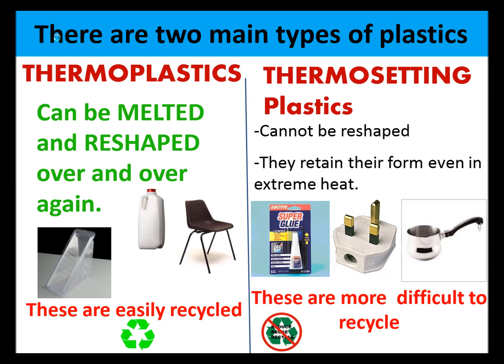The main two types of plastics we're going to look at are thermoplastics, which can be melted and reshaped over and over again and are easily recycled. The other type are thermosetting plastics, which cannot be reshaped over and over again — they retain their form even in extreme heat and are more difficult to recycle.